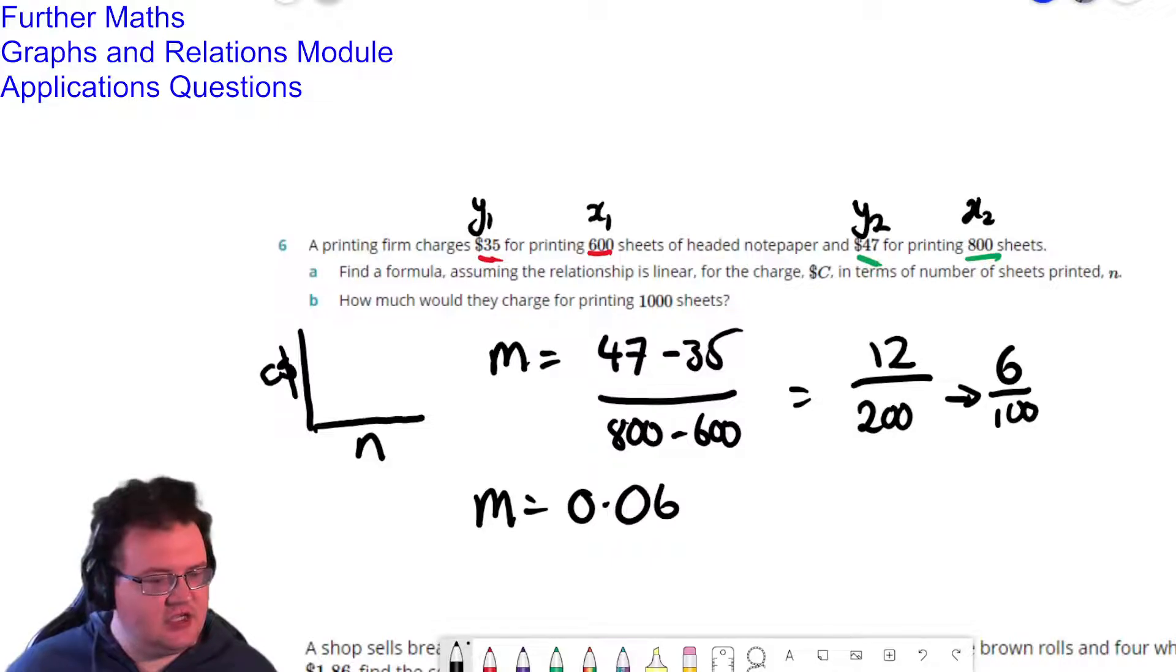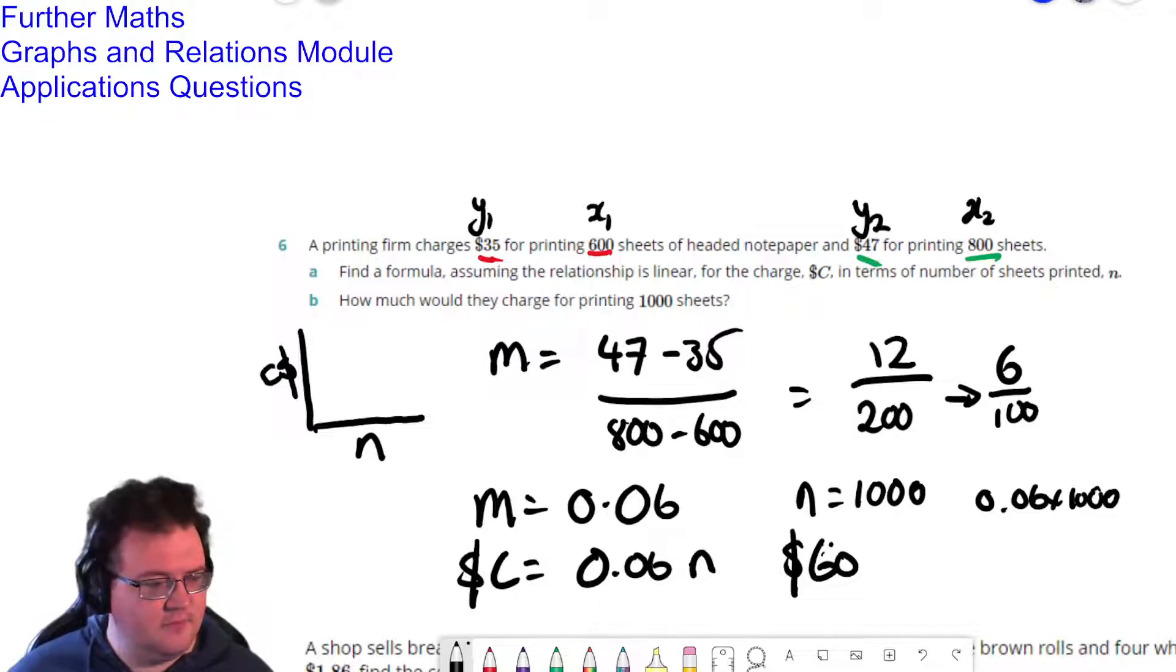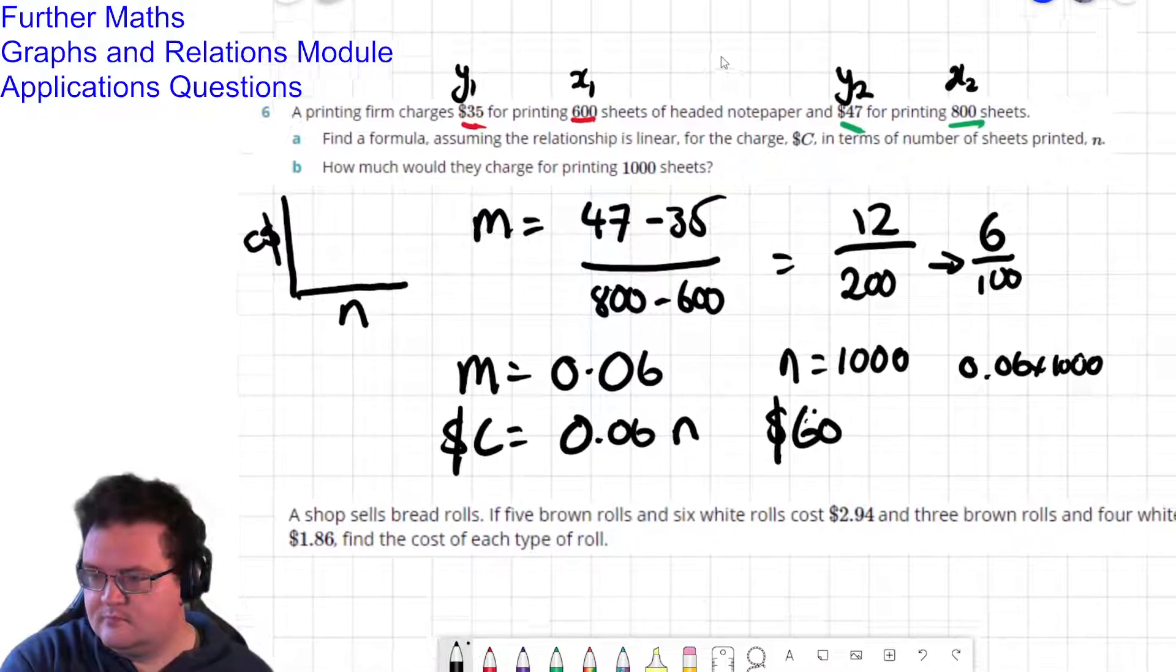And put it this way, if you haven't printed anything, do you get charged anything? No. So the equation is just going to be equals 0.06 n for the sheets. And then part b says for a thousand sheets, well if n equals a thousand, so c equals 0.06 times a thousand. So that's going to be 60 dollars.